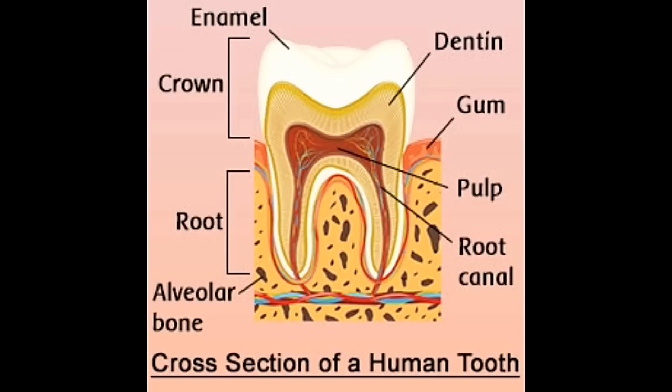The crown refers to the part of the human tooth that is visible to us. The enamel, dentin, cementum, pulp, root, periodontal ligaments, etc., are important parts of the tooth structure. Bustle provides labeled human tooth diagrams to help you understand the human tooth anatomy.